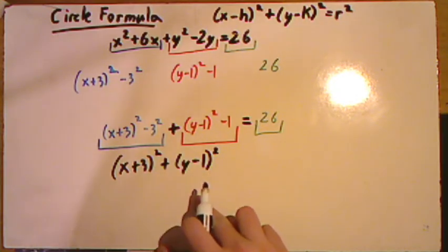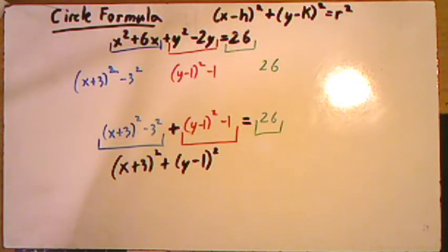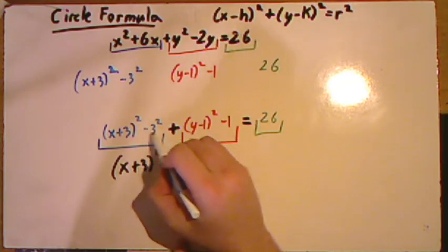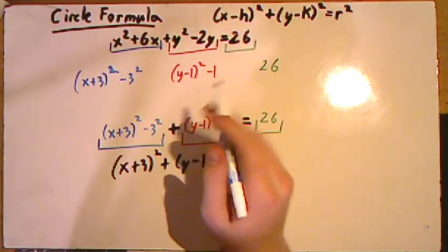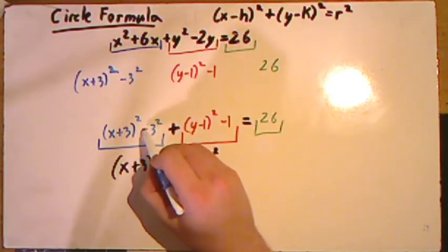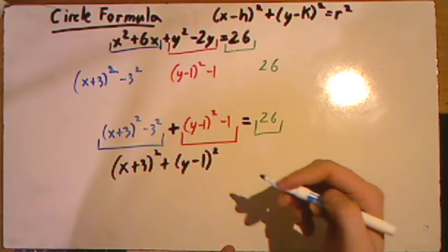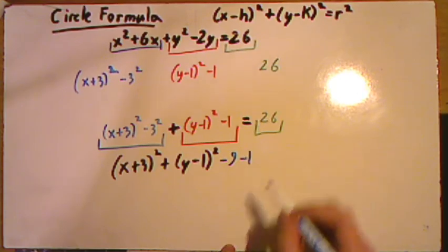Now what isn't in our original formula on the left side are numbers outside of these parentheses, so let's combine them for now. So in this case negative 3 squared, subtracting a 3 squared, not negative 3 squared, those are very different. We're subtracting a 3 squared and when we square 3 we end up with 9, so we have a minus 9 and a minus 1 and that is equal to 26.